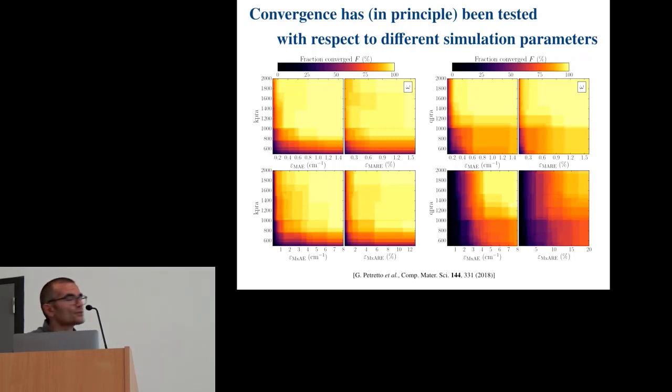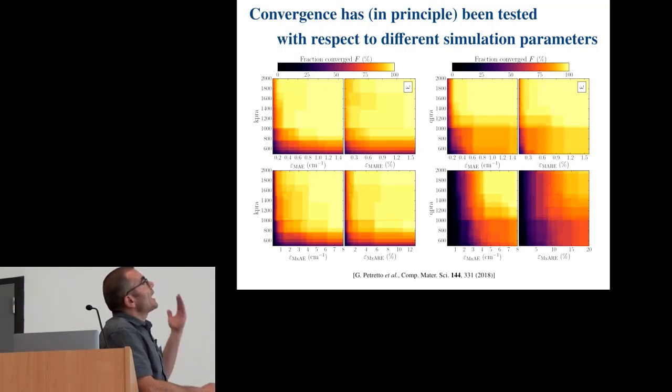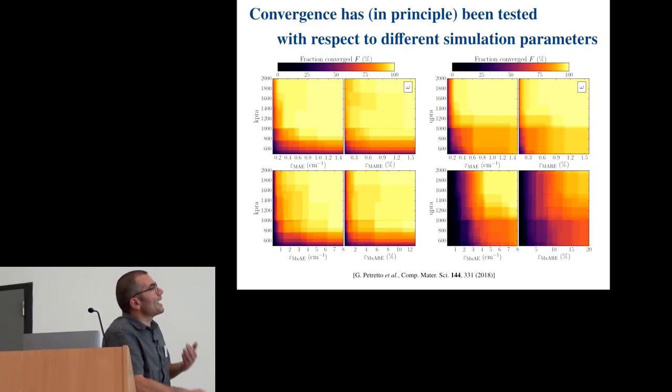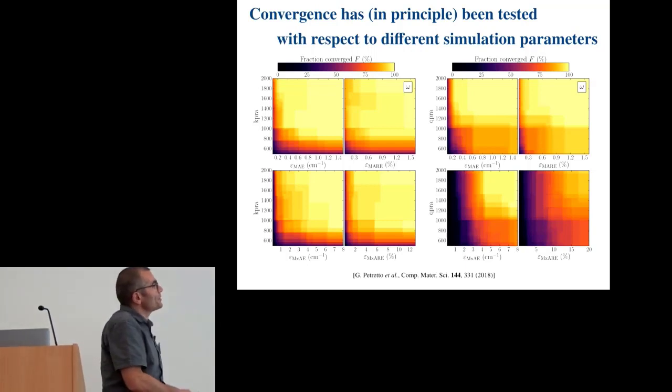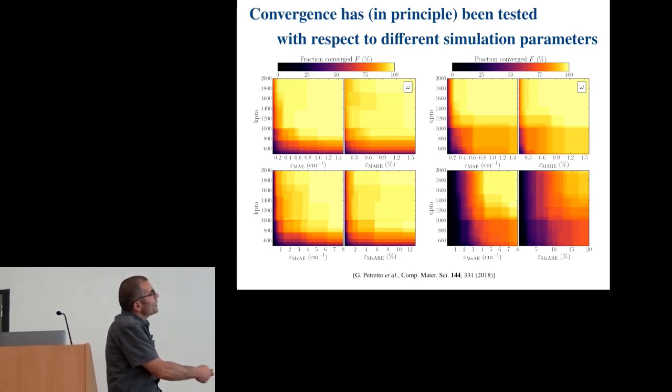The same was done for phonons, where we checked the amount of k-points that are needed to get a certain average error, a relative error, an absolute error, a maximum error, both for the k-point sampling, for the q-point sampling, and as a result of that study that was done on a limited number of materials, say 50 materials, we can get a sense that if we use a given density of k-point, say for instance, here, then the maximum error is going to be a given number of wave numbers. And then once we decide the accuracy that we target for our high throughput calculation, then we start running the calculation based on the statistics that we have established before.